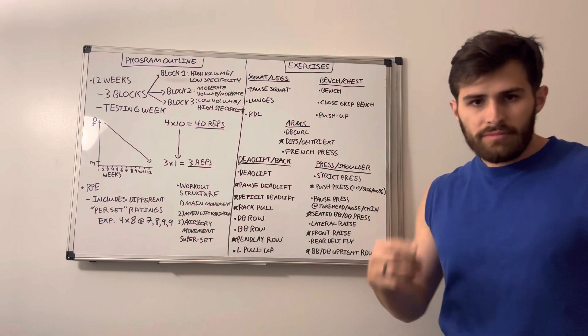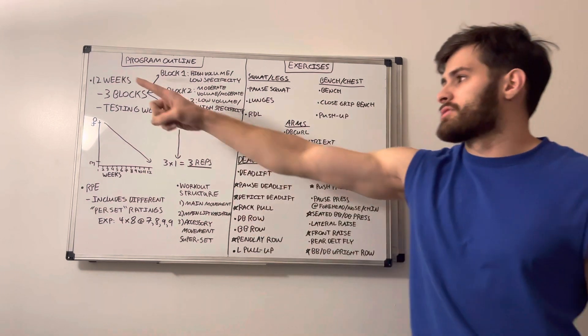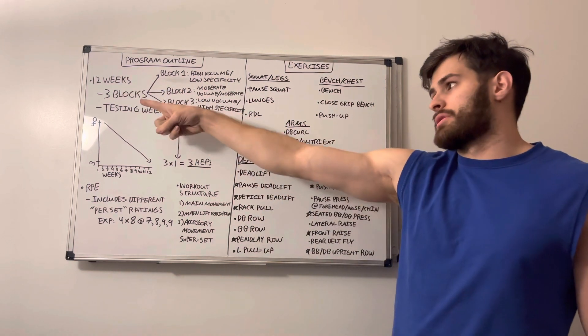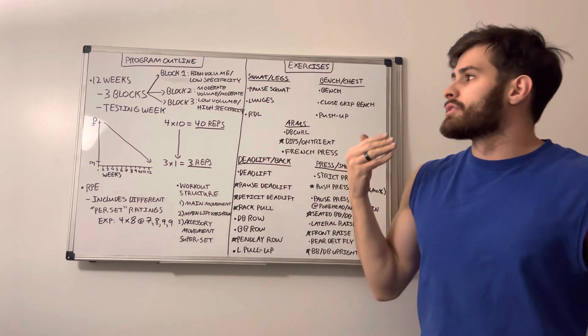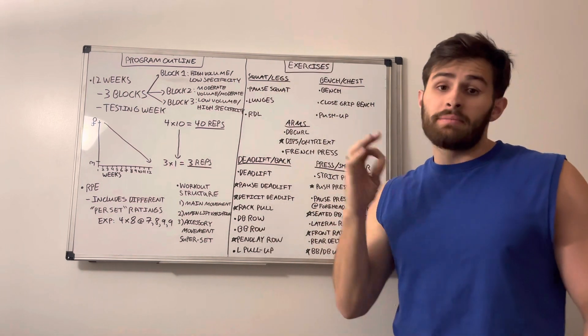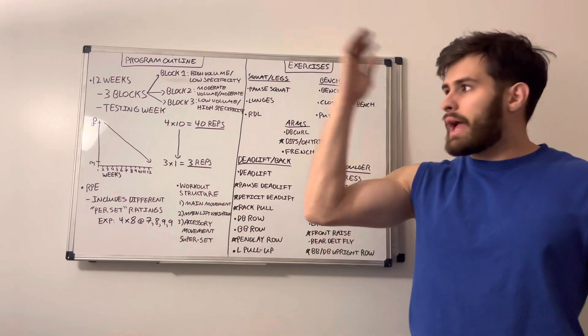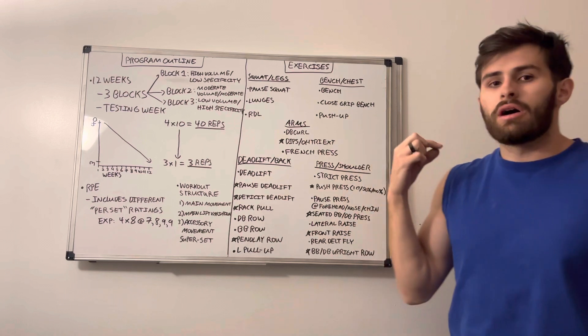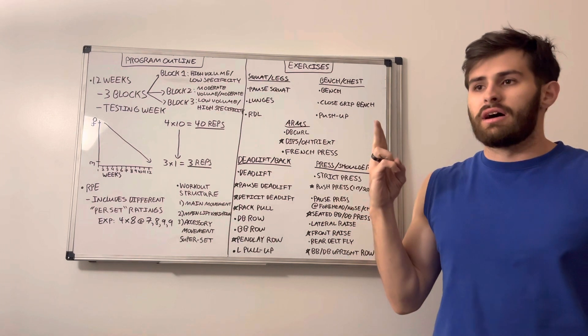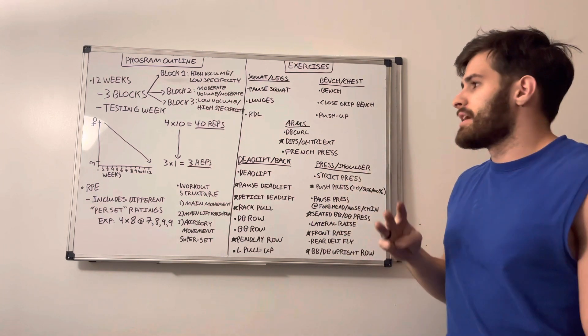Firstly, the program outline. Just like the last program, it is 12 weeks long, it's broken up into three blocks. The first block is going to be high volume, low specificity. And what I mean by specificity, at the very end of the program, we are going to do a testing week to where we're going to be testing out our overhead press, our deadlift, still on the side on the squat and the bench press.